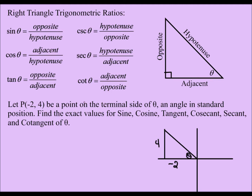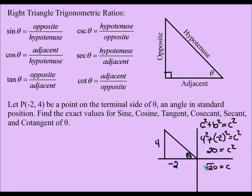Now I need to find the hypotenuse, because each of these trigonometric ratios — sine, cosine, cosecant, and secant — involve the hypotenuse. I'll use the Pythagorean theorem: a² + b² = c². Plugging in: 4² + (-2)² = c², which gives 20 = c². Taking the square root and simplifying, c = 2√5. This is my hypotenuse.